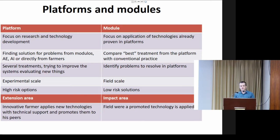Then we have the extension areas, where we treat the whole field the same and work with innovative farmers with the idea that they will then promote these technologies to their peers. We also have a register of impact areas, which are all the fields where the promoted technologies from the previous three components are applied.